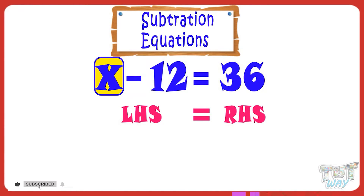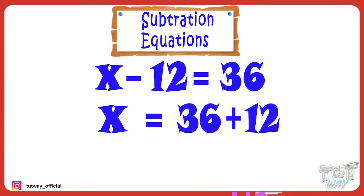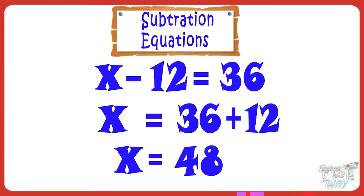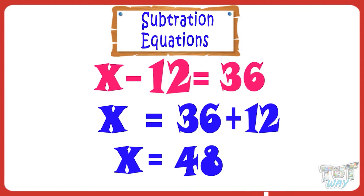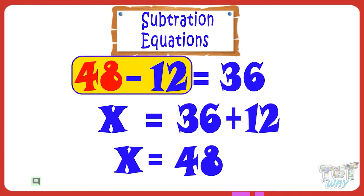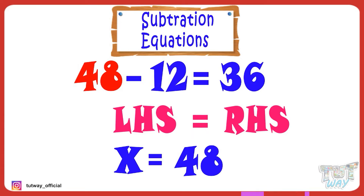Now let's find the value of X. Let X be on LHS and shift the other number to RHS. We know we have to make the signs opposite, so it will be X equals 36 plus 12. 36 plus 12 equals 48, so X equals 48. You can cross-check your answer by putting the value of X in the original equation: 48 minus 12 equals 36. LHS equals RHS. Hence, the value of X we found is correct.